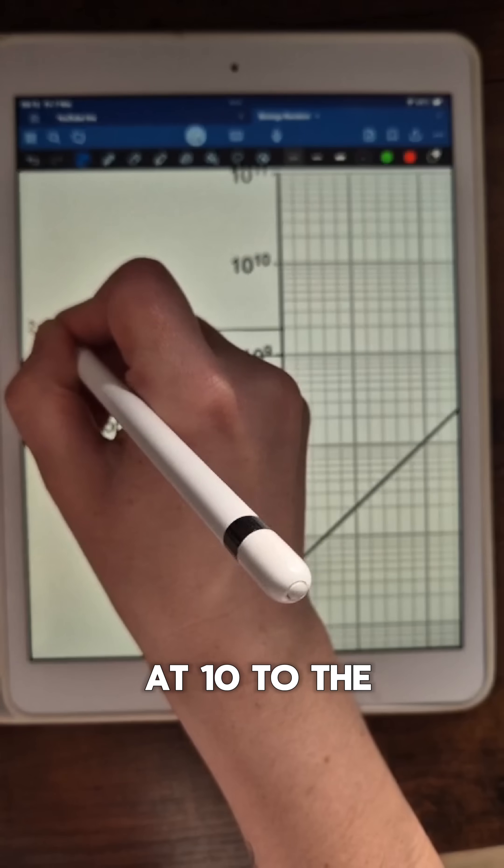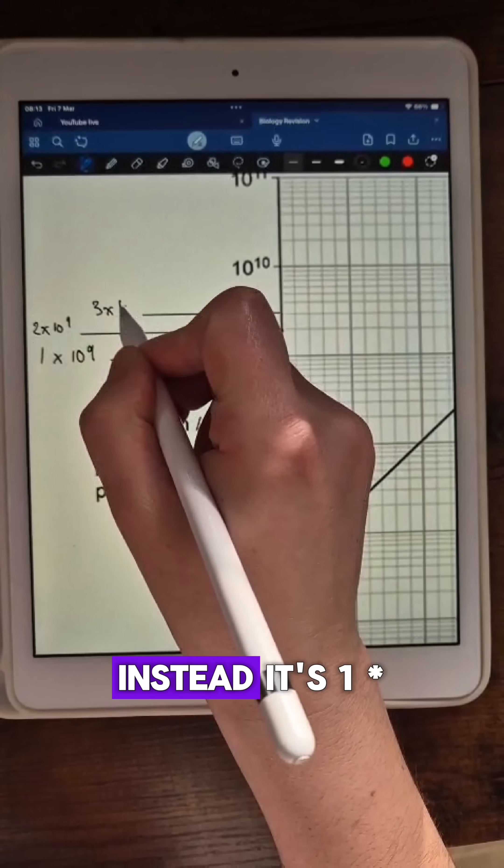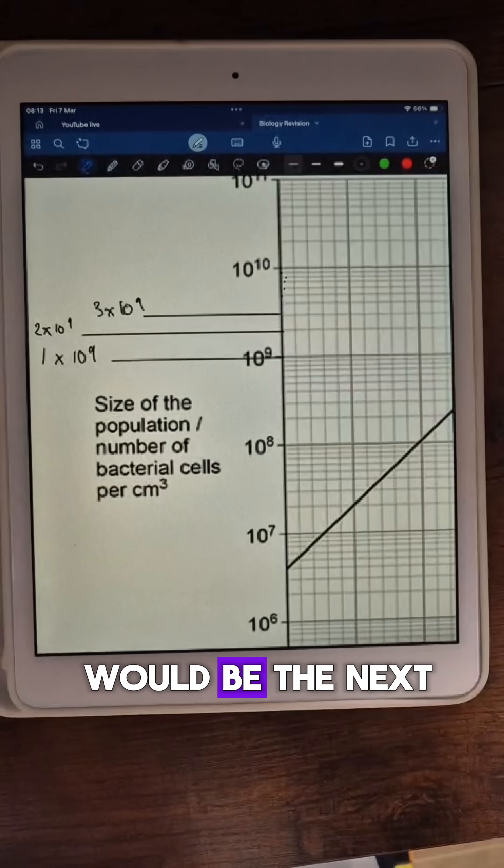This example where we're looking at 10 to the power of 9, it wouldn't mean 10 to the power of 9.1, 10 to the power of 9.2. Instead it's 1 times 10 to the power of 9, 2 times 10 to the power of 9 would be the next line up.